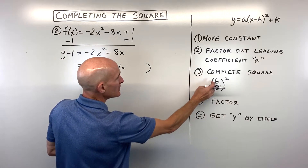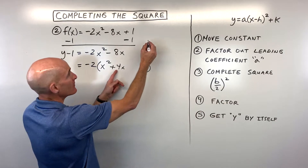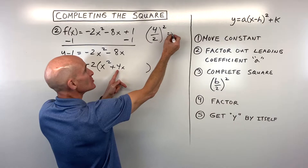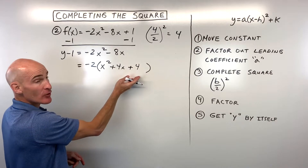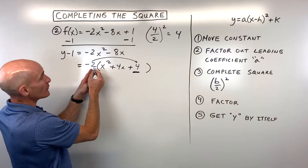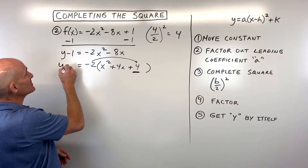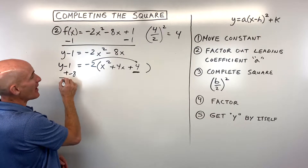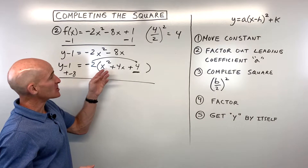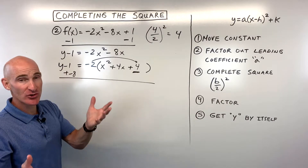For step three, we complete the square by taking b divided by two, the quantity squared. The b value is four, so four divided by two squared equals two squared equals four. We add four to the right side inside the parentheses, but notice it's multiplied by the coefficient negative two. So negative two times four is negative eight — we add negative eight to the left side to keep it balanced. Don't just add four to both sides when the leading coefficient isn't one.